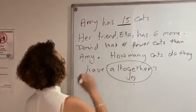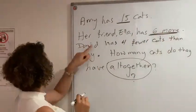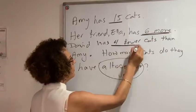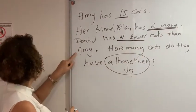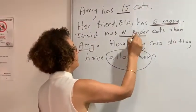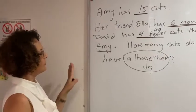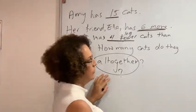Keywords: Ella has 15. Ella has 6 more. More is a keyword. David has 4 fewer than Amy. If students don't understand fewer, just replace it with less. Just explain that fewer means less. And how many cats do they have all together?